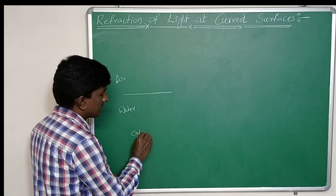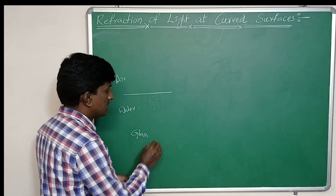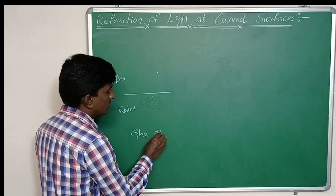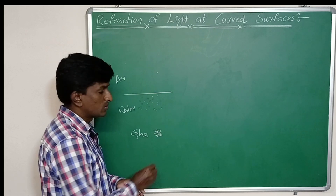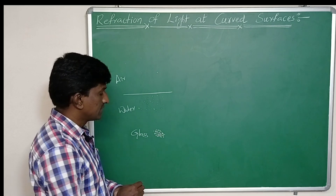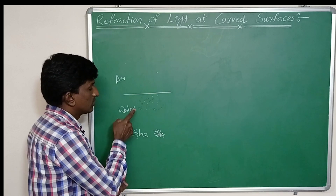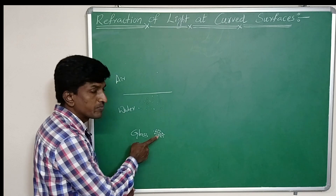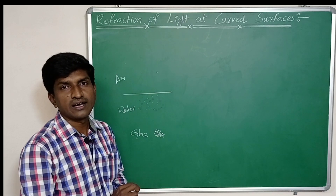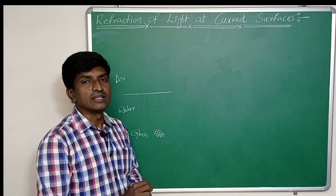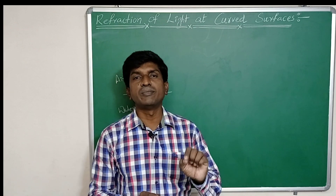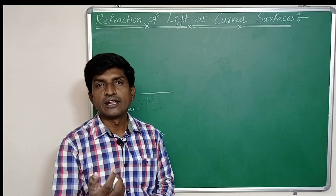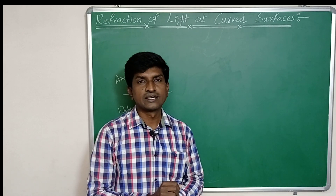If we consider glass, light also travels through glass. Glass is a solid, so its particles are much closer to each other. When we compare glass with water, water is the rarer media and glass is the denser media. Simply put, in rarer media the particles are far apart, whereas in denser media the particles are closer together.